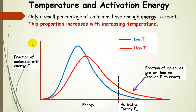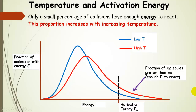Here is a plot showing the fraction of molecules with a certain energy — these are distributions. Looking at the low temperature curve, if we set the activation energy on the x-axis, only the area under the curve beyond that point represents molecules with enough energy to react. At higher temperatures, the distribution shifts to higher energy, so the area under the curve beyond the activation energy is larger, meaning more molecules have enough energy to react.